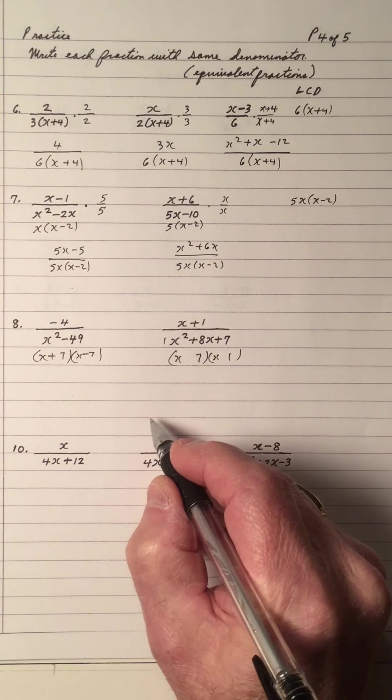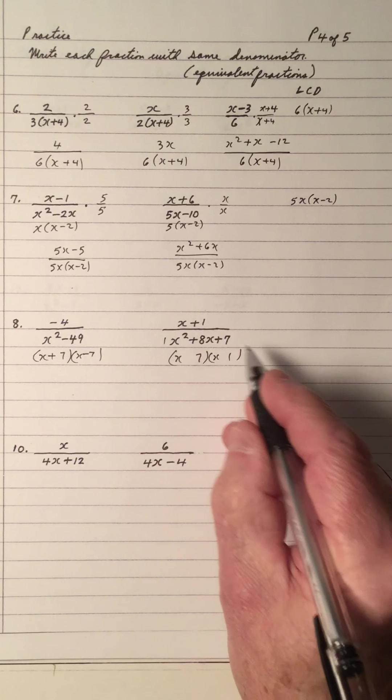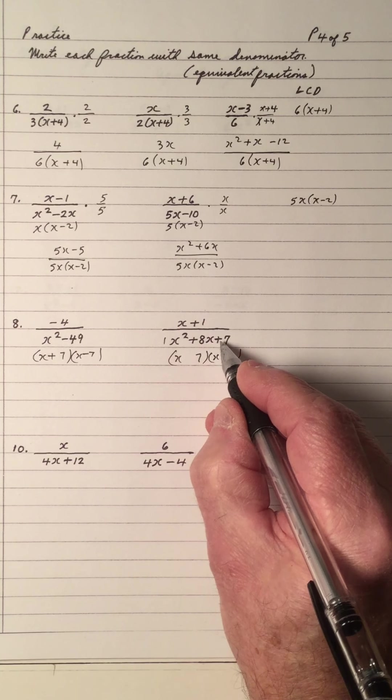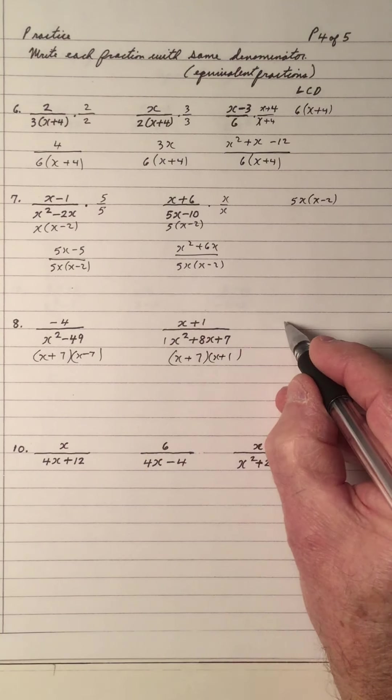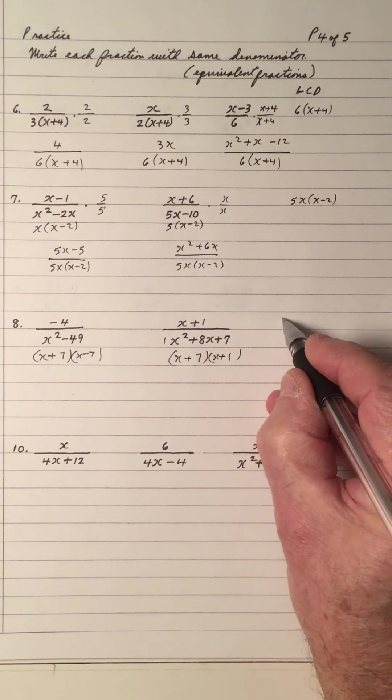So is it going to be plus 7 or minus 7? Product is positive, sum is positive — so it's plus 7 and plus 1. And the LCD has got to have x plus 7, x minus 7 — you've got to have this one. Now what's here that's not up here? x plus 1. You've got to have one of each of the factors. So this denominator is right there with an extra; this denominator is right there and this is extra.